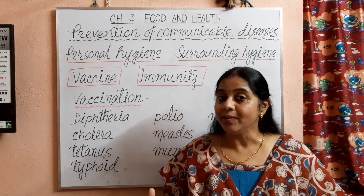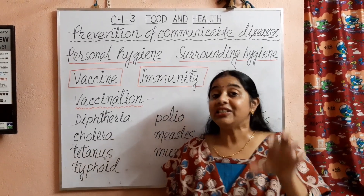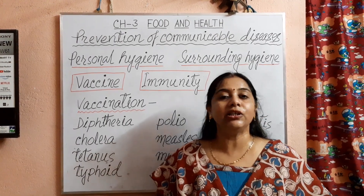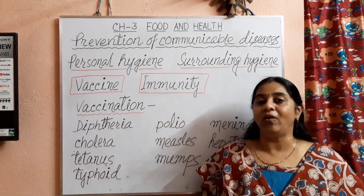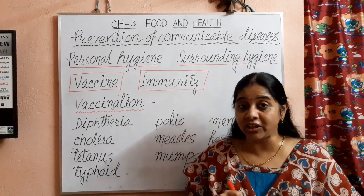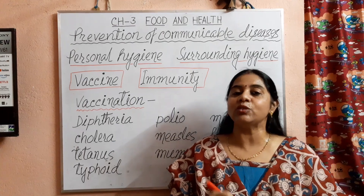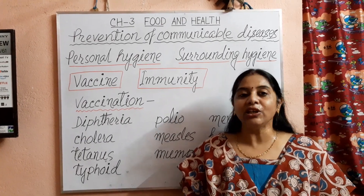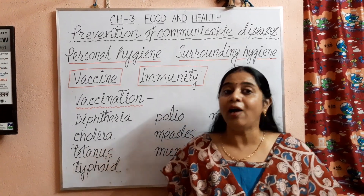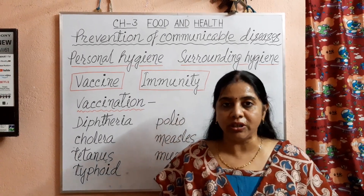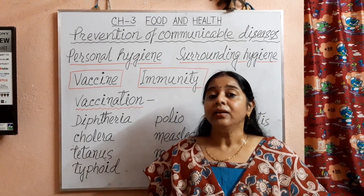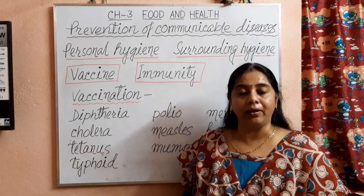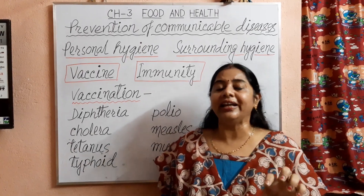What is immunity? The resistance power of our body which helps us to fight with foreign germs or disease is known as immunity. You are taking vitamin C for increasing your immunity, doing regular exercises for boosting your immunity, and taking a balanced diet to increase your immunity power to fight with coronavirus. By taking vaccination, we can also increase our immunity power against a specific disease.